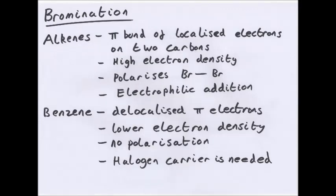Bromination. Alkenes: pi bonds are localised electrons. There's a pi bond between the carbon double bond. High electron density which polarises bromine. Electrophilic addition happens, bromine joined. Benzene is delocalised pi bond, so there's less electron density, no polarisation, which is why the halogen carrier is needed.